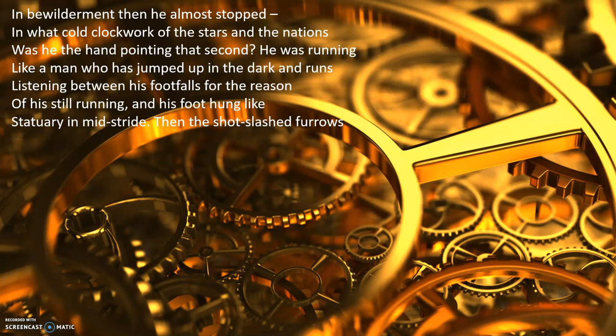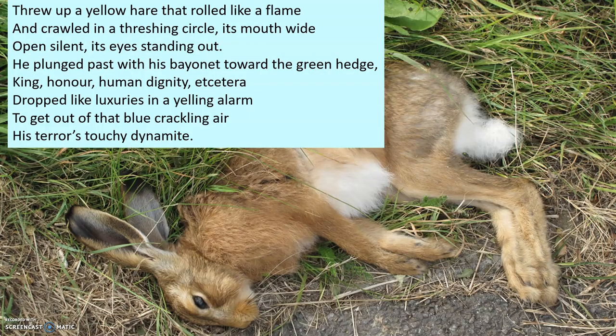He's running, running, running — and then this stanza feels like a momentary pause, a real stop, thinking about the soldier. Then it's almost like pressing play again and the battle starts all over again in the last stanza. It throws up a hare — he sees a dead hare lying there. Going back to Hughes's focus on nature and its brutality, that's a really brutal image: this beautiful animal lying dead because of what humans have done. In the poem the hare 'crawled in a threshing circle, its mouth wide open silent, its eyes standing out' — almost screaming in pain but silently.